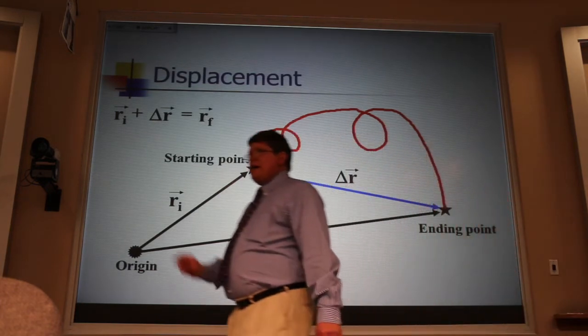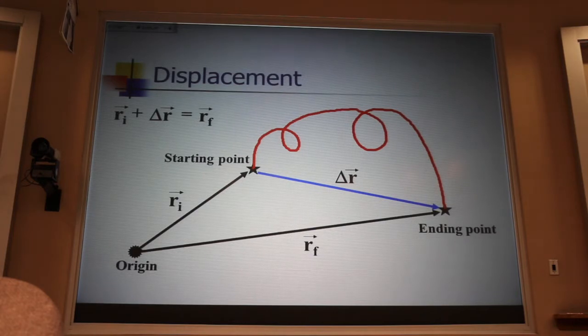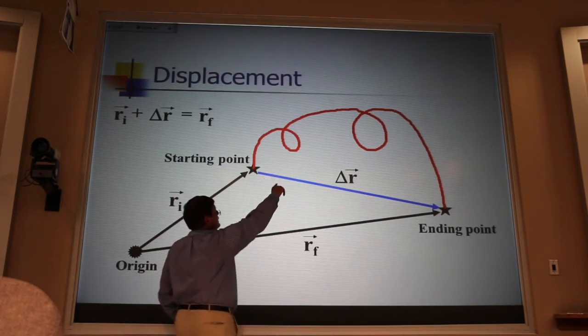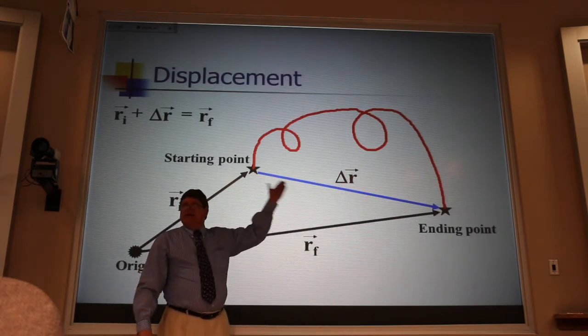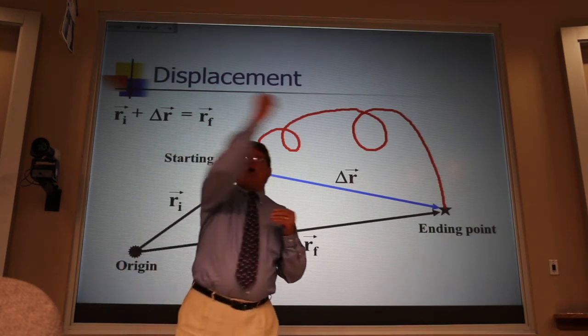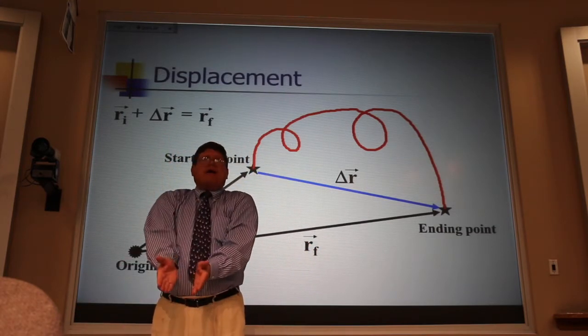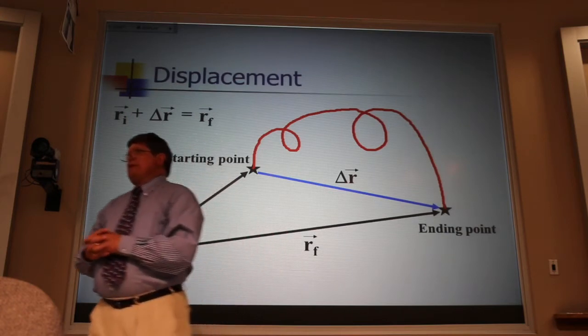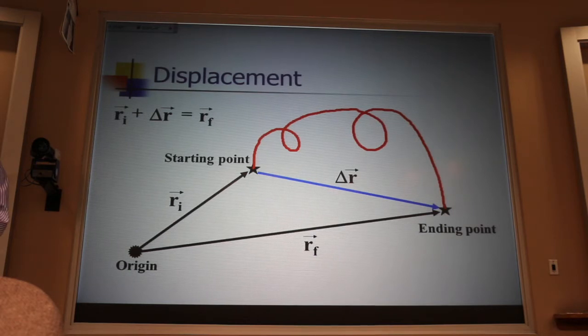And I want to point out two important things about that displacement. First of all, it's very, very different than the distance traveled. If this is the wanderer that you get in the woods, the displacement vector is as the crow flies. If I were to start right here and go all the way around the earth as fast as I could and come back right here, my displacement would be zero. My distance traveled would be a huge number. Very different concepts.